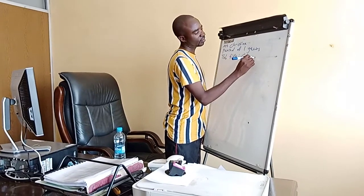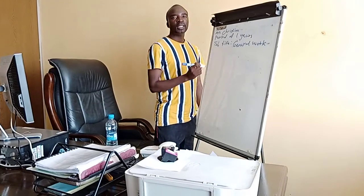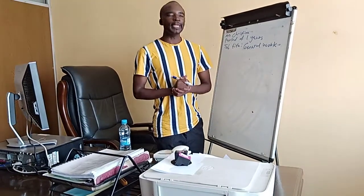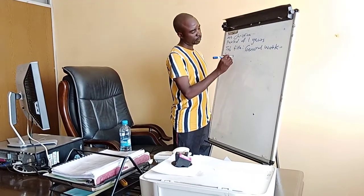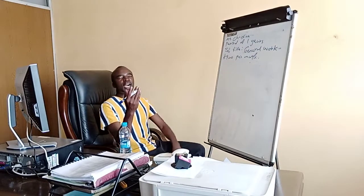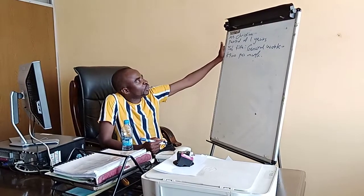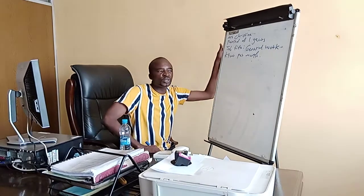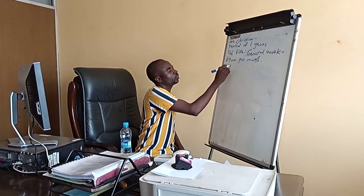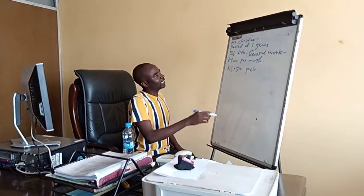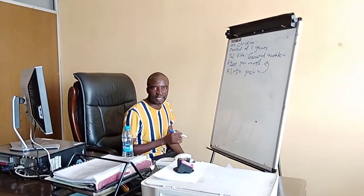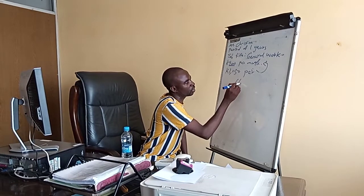Her job title is general worker, and the month she was getting — let's assume she was getting 900 per month. Now if you look at Mrs. Christine, she was working as a general worker. According to the Employment Act 269, the best salary she was supposed to get is 1,050 per month, but she was getting 900. So this is underpayment.